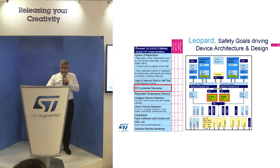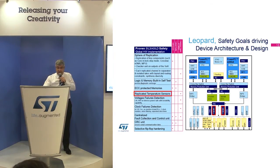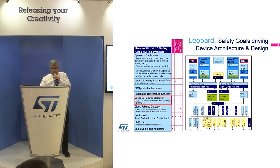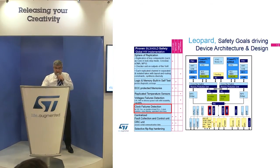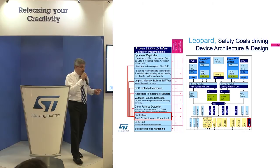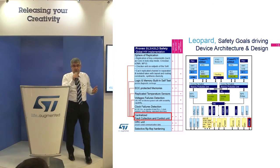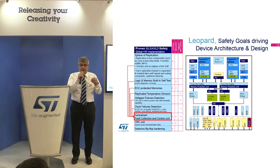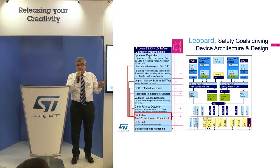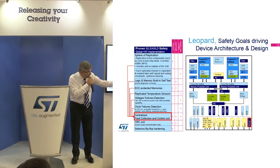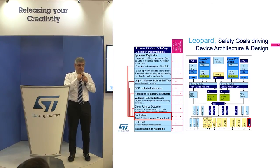We have protected the flash and RAM with the ECC traditional approach, and we have replicated many control elements such as the temperature sensor, the voltage failure detection, and the clock failure detection. We have brought all of this together to communicate with the FCCCU — the Fault Collection and Control Unit. This unit is programmable, so you can instruct it to take actions automatically. Depending on the fault received, it can react autonomously — for example, it can reset the device. In any case, it will communicate with the outside to give the system information about what fault has been detected.